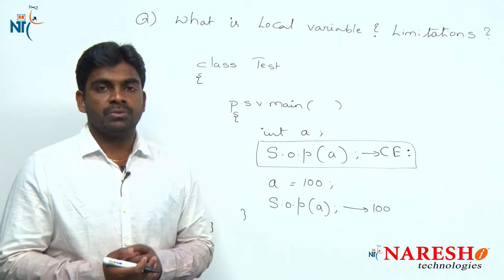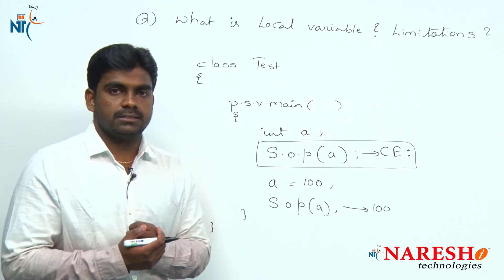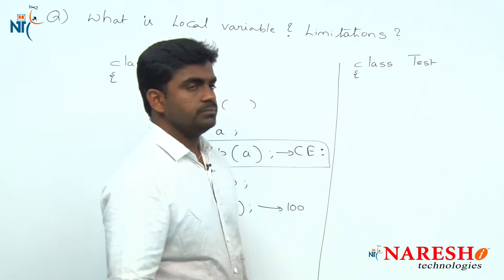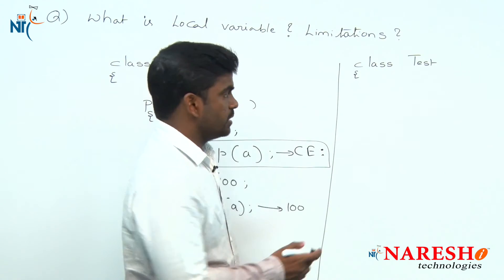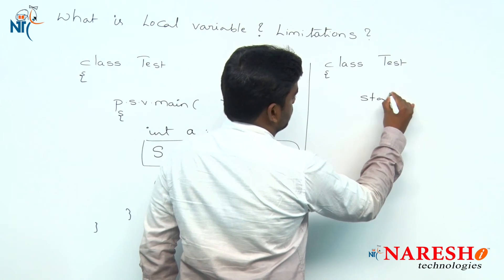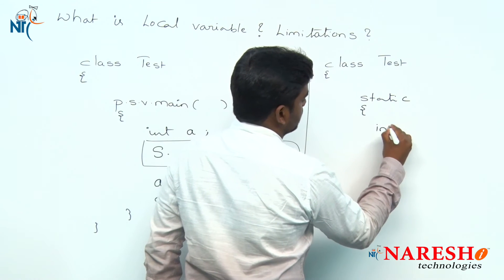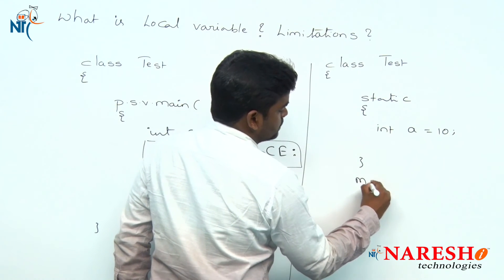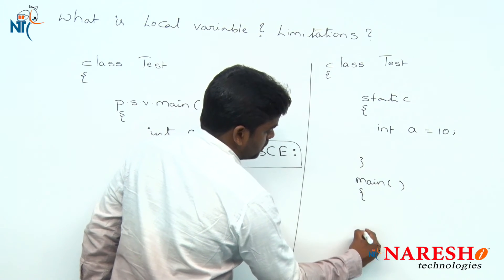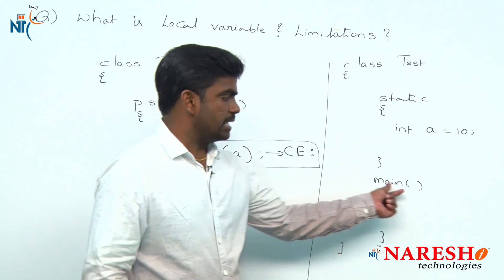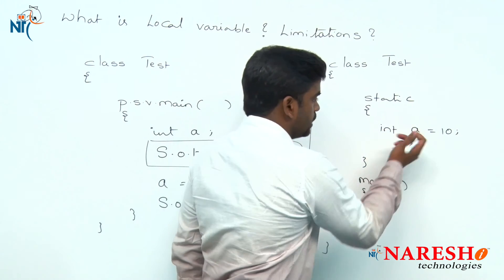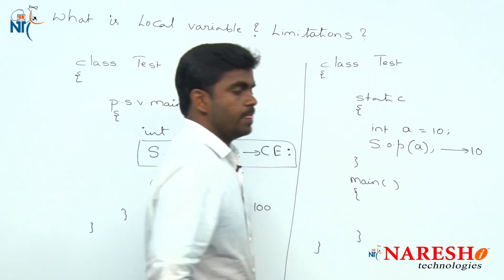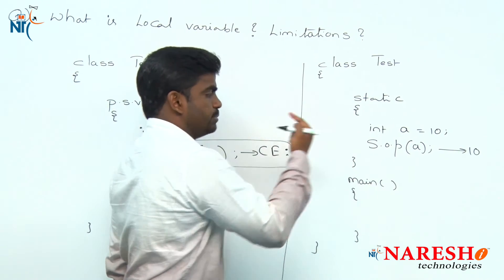A local variable can only be accessed within the block or method where it is declared. For example, take a class called Test. Inside a static block, if you declare and initialize a local variable 'a = 10', you can access it within that static block and it will print 10. But once the static block execution completes, control passes to the main method.